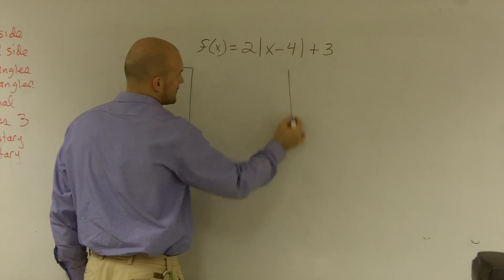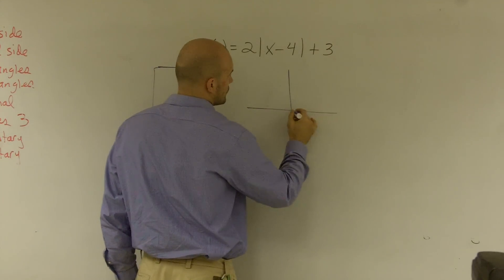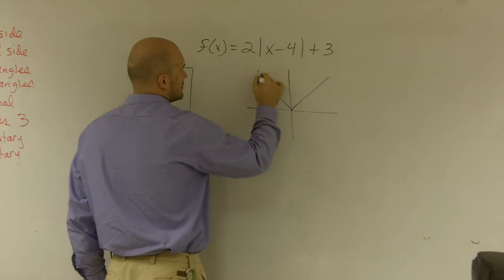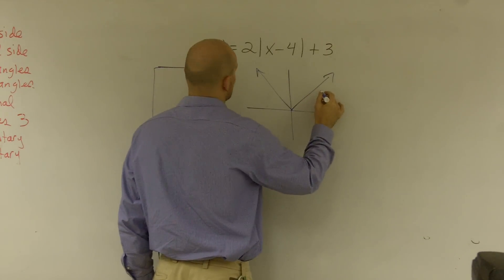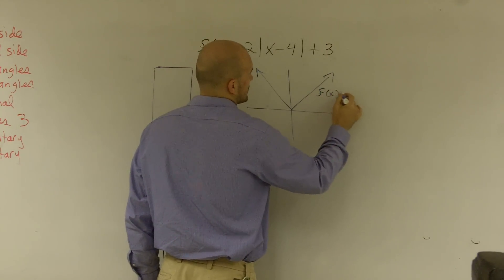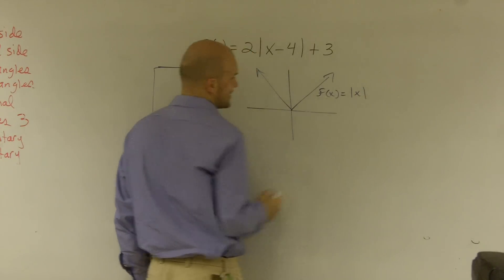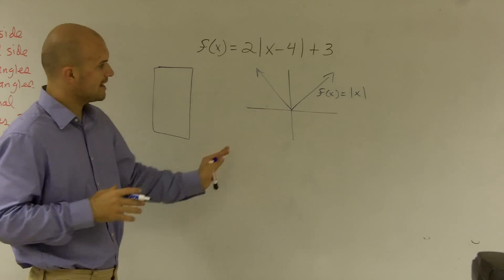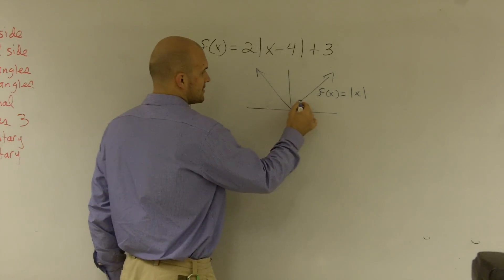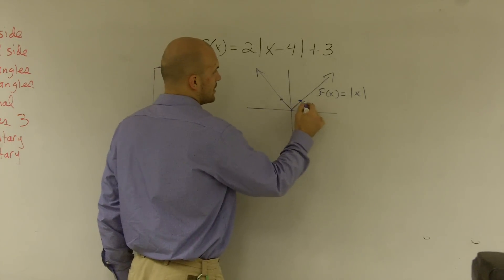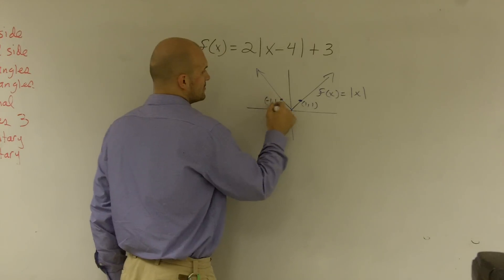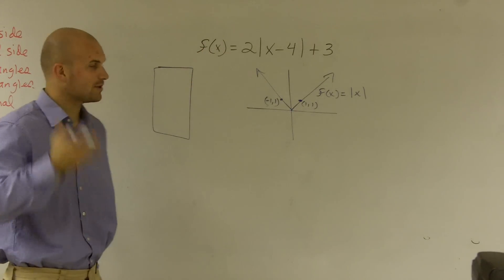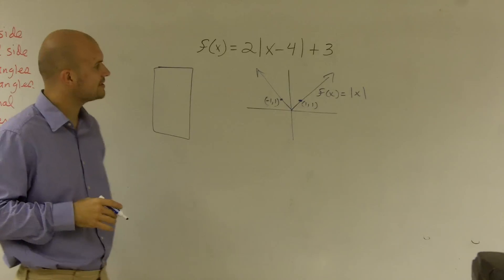Now, we know that our regular graph, without any alterations, f of x equals absolute value of x is right there, right? Not shifted up or down, it has a vertex at 0, 0. And it goes up, has two points that we know, which is 1 comma 1 and negative 1 comma 1, right? We actually know the rest of them. The slopes are 1 over 1, going to the infinity, negative infinity.